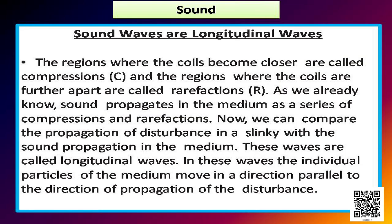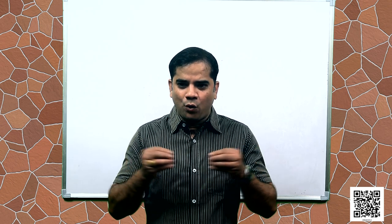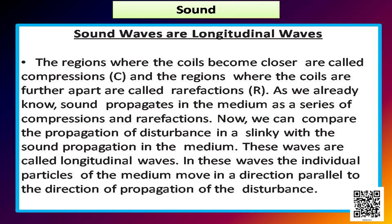The regions where the coils become closer are called compressions. When we stretch and release or pull and push, some parts of the slinky are close to each other and some are further apart. The closer coils are called compressions and the regions where coils are further apart are called rarefactions. Sound propagates in the medium as a series of compressions and rarefactions. We can compare the propagation of disturbance in a slinky with sound propagation in the medium.